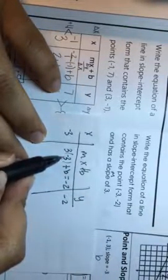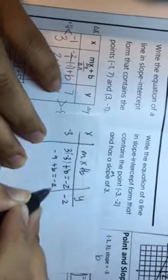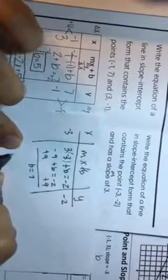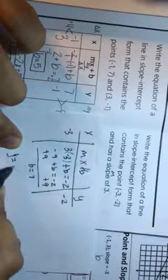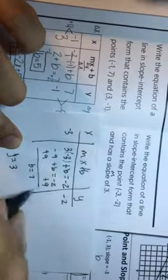Because we want it to equal that negative 2. So 3 times negative 3 is negative 9. So we're going to add 9 to both sides. So B is equal to 7. So our equation should be Y equals 3X plus 7. And there was a little bit of a mistake right there. So this should have been a positive 7.